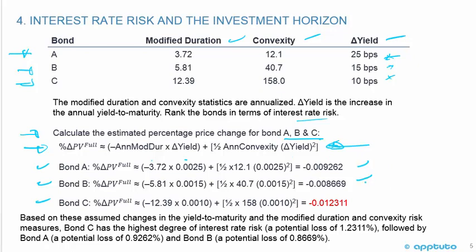This blue box example is looking for the biggest number — the greatest percentage change in the price of the bond. Bond C, highlighted in bold red, has a 1.2311% price change, which is greater than bond B and bond A. Based on these assumed changes in yield to maturity and the modified duration and convexity risk measures, bond C has the highest degree of interest rate risk at negative 1.2311%, followed by bond A at negative 0.9262%, and bond B at negative 0.8669%.